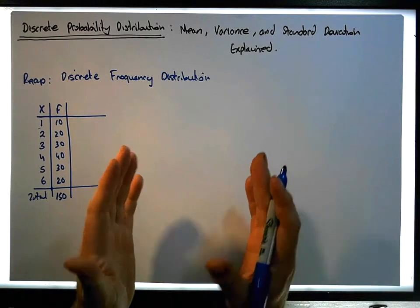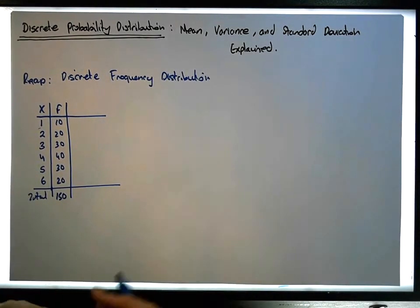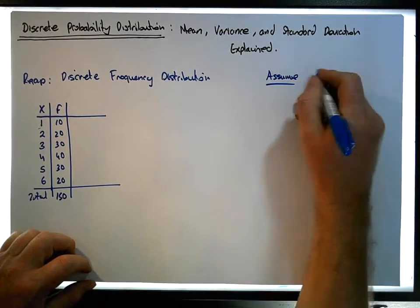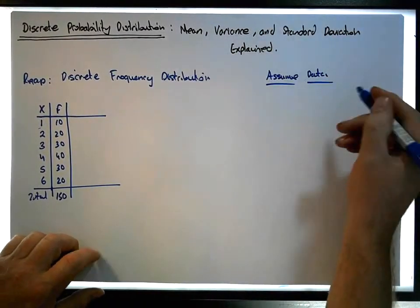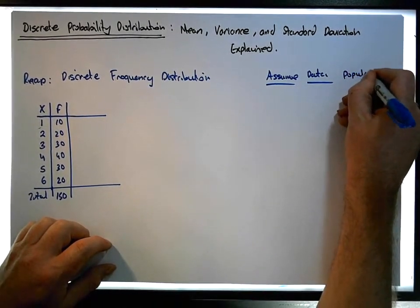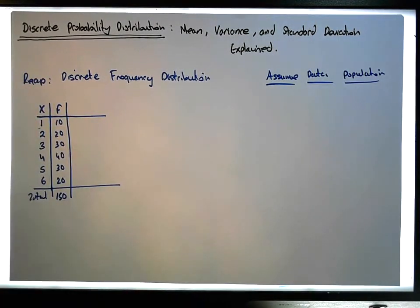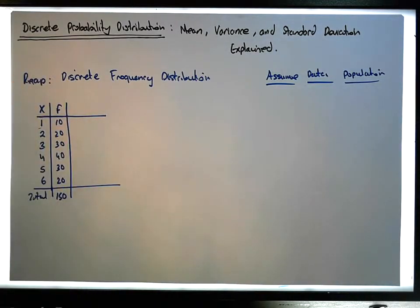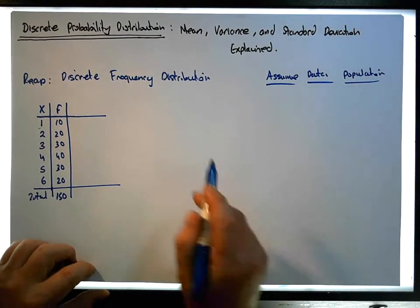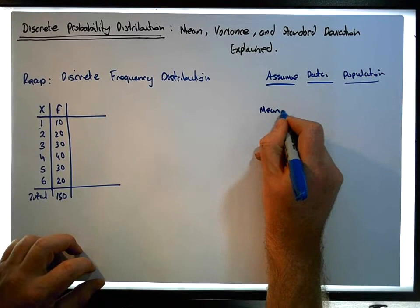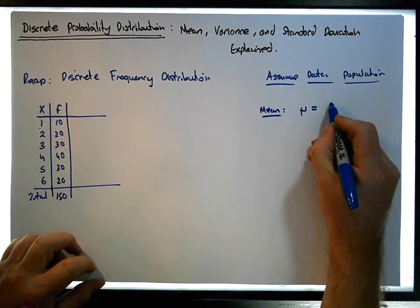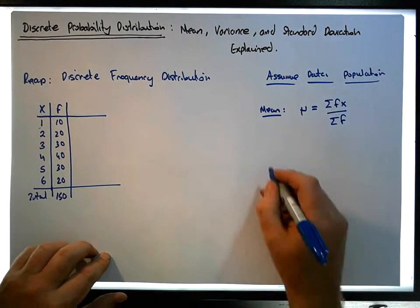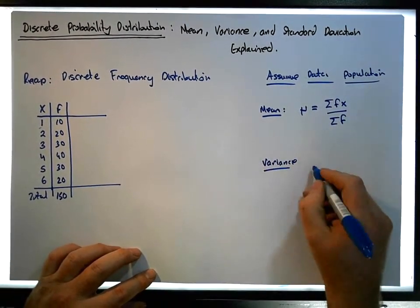If you look back to one of the earlier videos in this playlist you'll see an explanation of those formulas. Assuming this data is population data — these are all the values we got from a particular experiment — to calculate the mean, symbolized by mu, for a frequency distribution it's simply equal to the sum of the frequencies times the observations, divided by the sum of the frequencies. For the variance, the population variance sigma squared is the sum of the squared distances between the observations and the population mean.